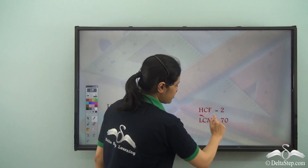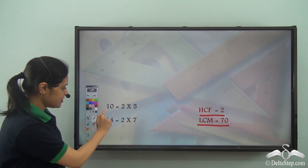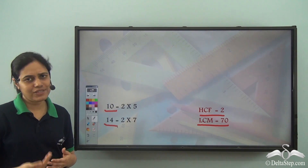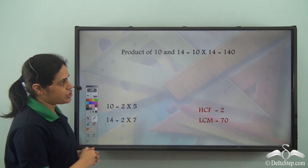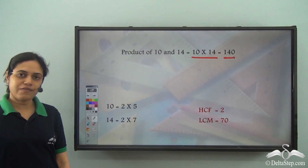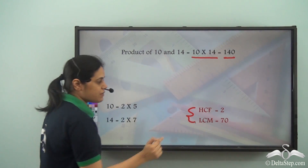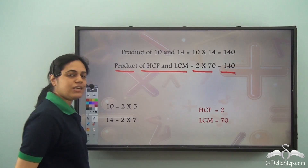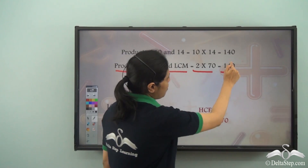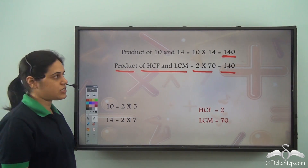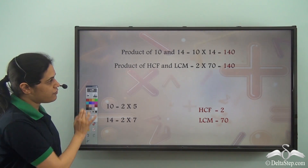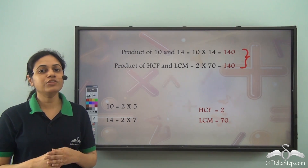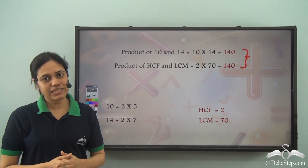So, the HCF is 2 and the LCM is 70, and the numbers are 10 and 14. Now, let us find the product of these numbers. The product of 10 and 14 gives us 140. And let us also multiply the HCF and LCM. The product of HCF and LCM is 2 × 70, which is 140. So, the product of the numbers is 140 and the product of HCF and LCM is also 140 — these are the same. So, we have now found the relation between the numbers and their HCF and LCM.